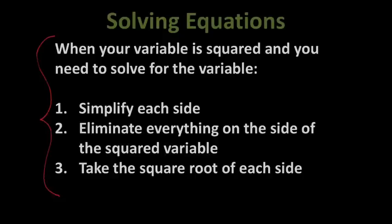When your variable is squared and you need to solve for that variable: number one, simplify each side. So if there's distributing to do, if there's any terms to combine, do anything that you can do on each side. Number two, eliminate everything on the side of the squared variable. So you want to make sure if it's 2 plus a squared, you eliminate that 2. And then finally, you take the square root of each side. So pause and get that copied.